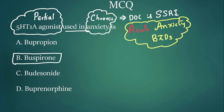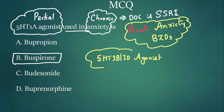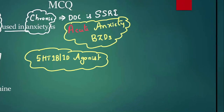Now, what are bupropion and budesonide? Let us discuss. But before that, tell me a drug which is a 5-HT1B/1D agonist. Which drugs are these? Please answer in the comment section. Now let me discuss the other options.